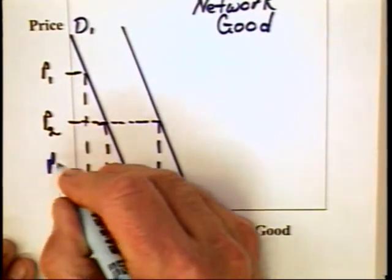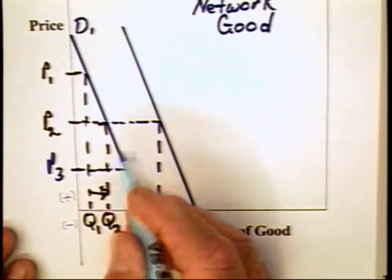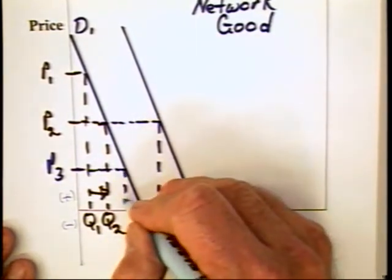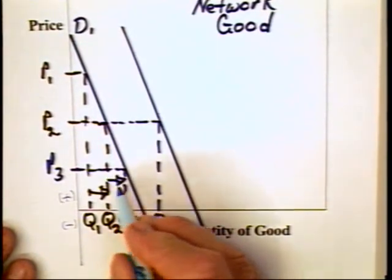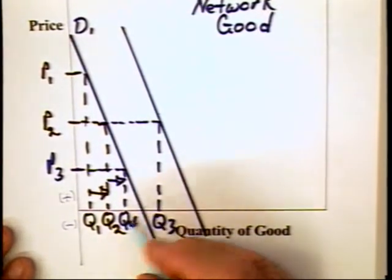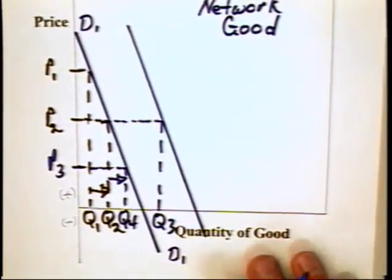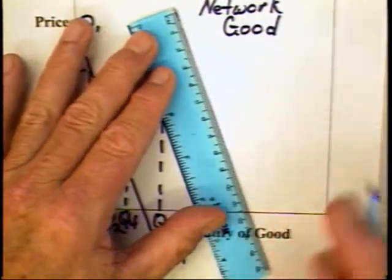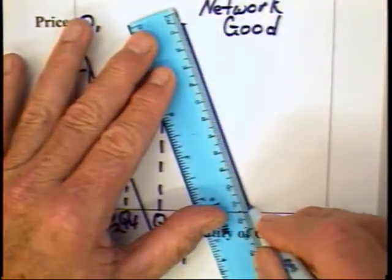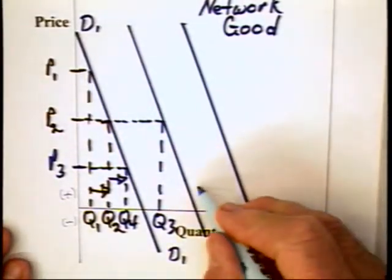But that greater quantity can stimulate even more applications being written for the network good Windows operating system. And as a consequence, the demand curve can go up by even more in the future. This is D2, D3.